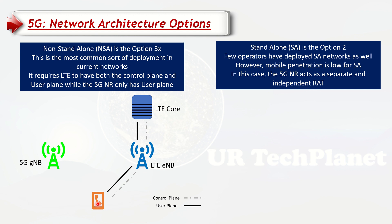In a non-standalone or NSA network, a 5G handset cannot connect to 5G directly — it needs to connect to LTE first. The solid black line represents the user plane, and the dotted line is the control plane. So it will have both user plane and control plane on LTE via the LTE air interface, and the eNodeB will have connections to the LTE core using both planes.